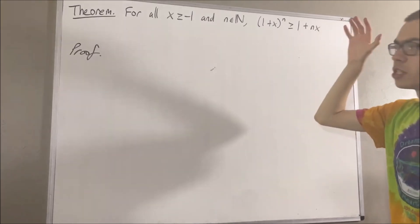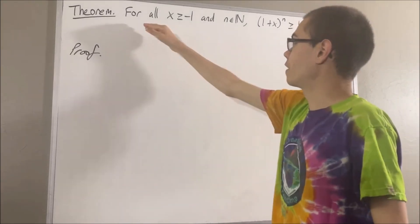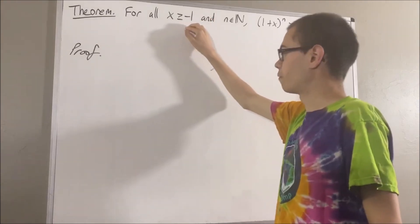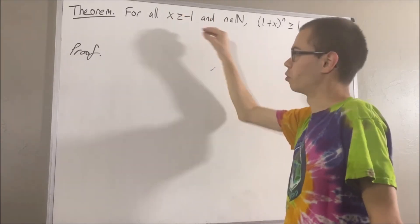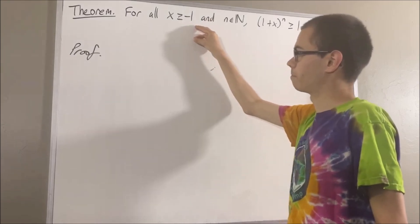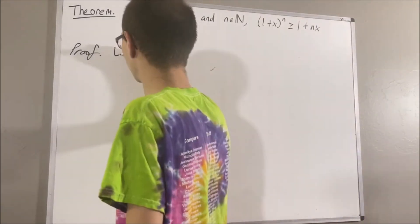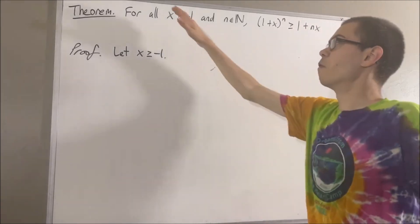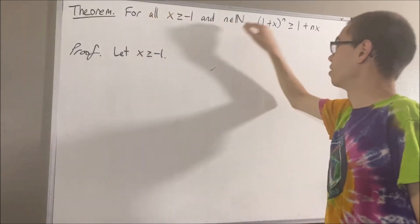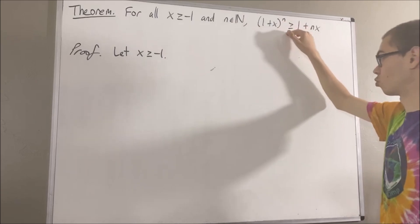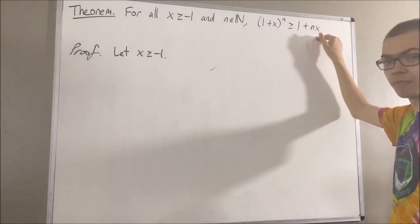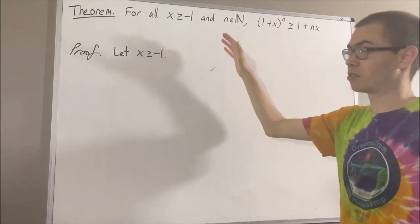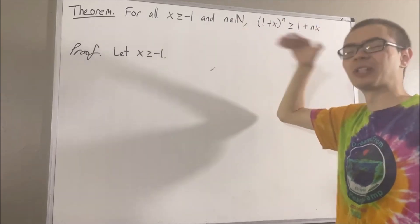Now, to start out the proof, since we're trying to prove a statement about every real number greater than or equal to negative 1, let's give ourselves an arbitrary real number greater than or equal to negative 1, and I'll call it x. From here, we want to show for all natural numbers n that 1 plus x to the power of n is greater than or equal to 1 plus nx. And since we're trying to prove a statement about all natural numbers, let's use induction.